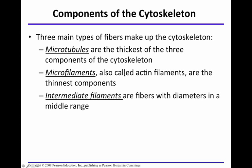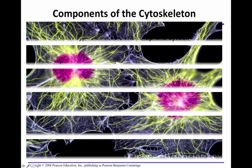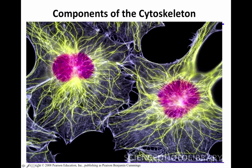Microfilaments are also called actin filaments. You can see the cytoskeleton stained in yellow in these two cells, and you can see how much of the cell is made up of this cytoskeleton.